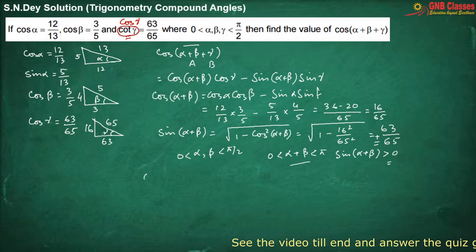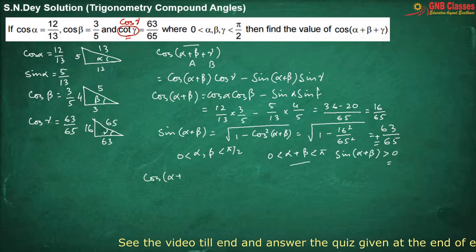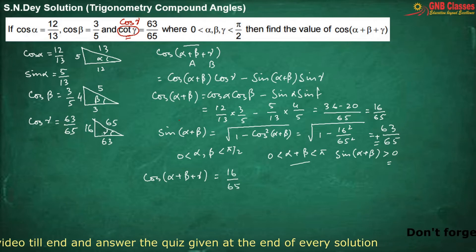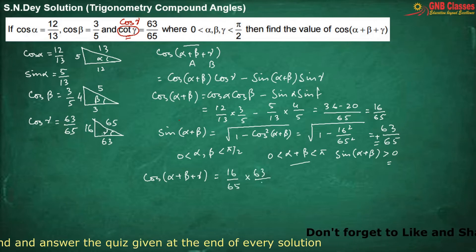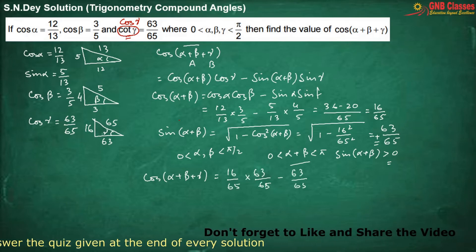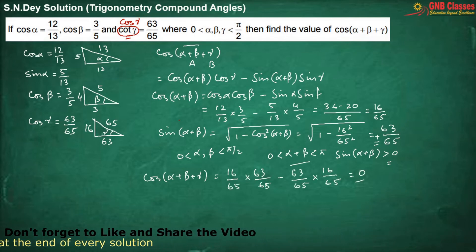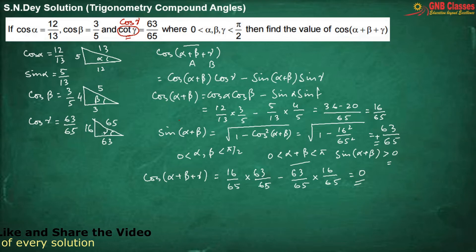Therefore, the value of cos alpha plus beta plus gamma equals 0. Is it clear to all of you? Have you understood it? Okay, move for the next problem.